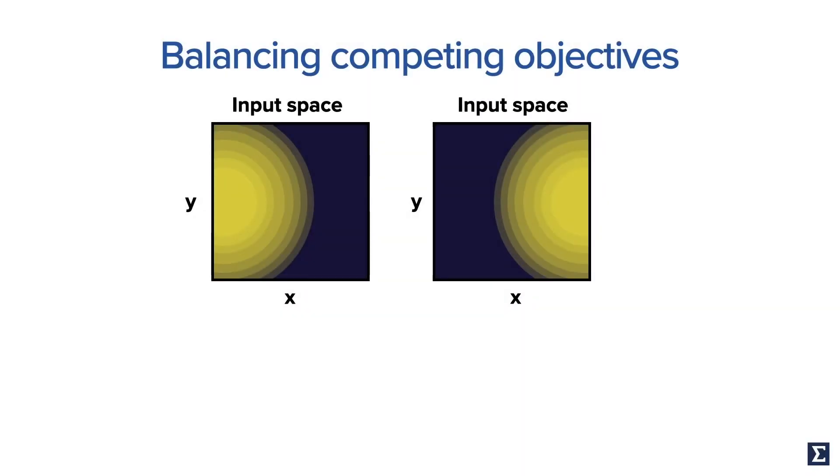In many situations, we have multiple competitive objectives that we care about. Here we show a problem with two metrics, where optimizing one hurts the other one.